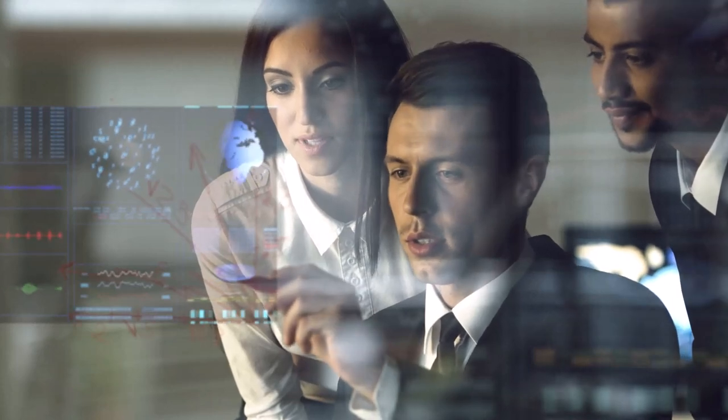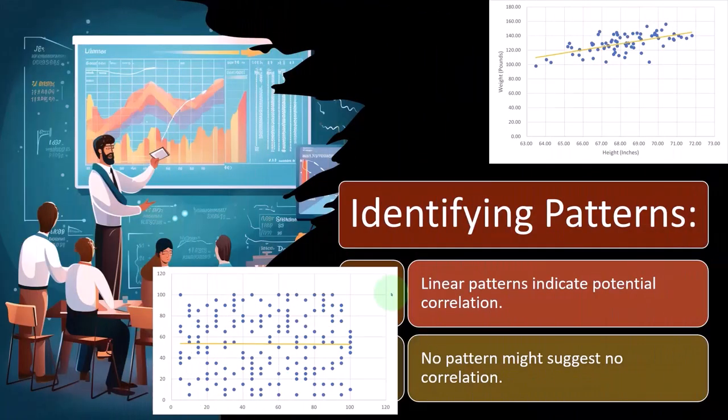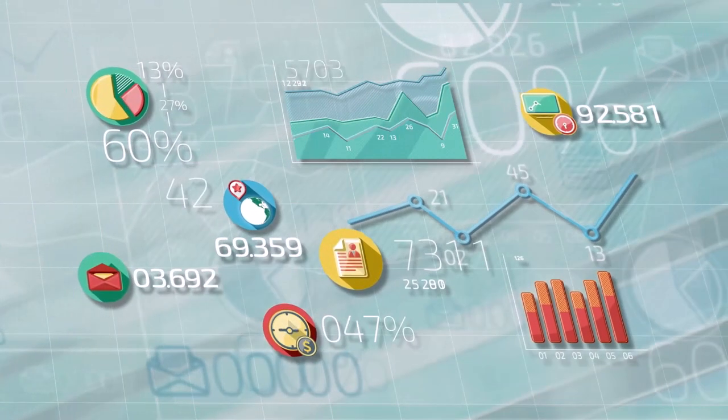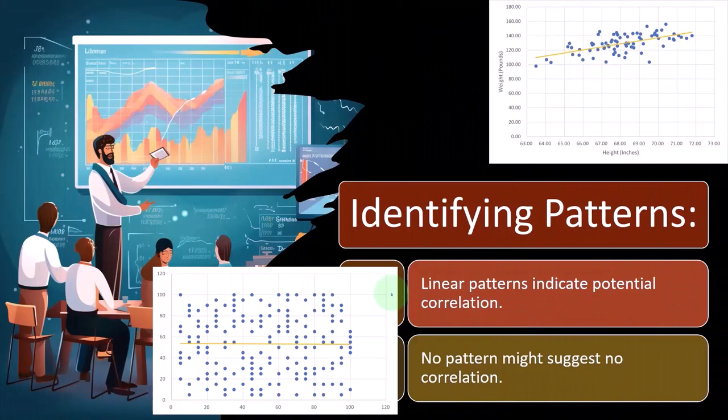But if you find zero correlation, then you would think at least with those two variables alone that there's not a cause and effect relationship. Because if there was a cause and effect relationship, you should be able to find some kind of correlation. Whereas if you find the correlation, it's not necessarily the case that there is a cause and effect relationship.